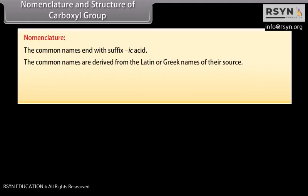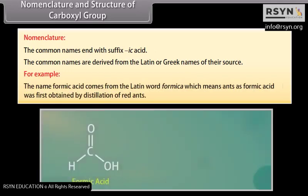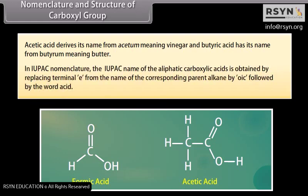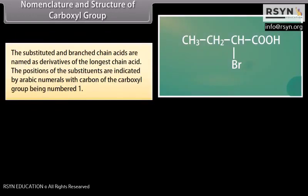Nomenclature: the common names end with the suffix -ic acid. The common names are derived from the Latin or Greek names of their source. For example, the name formic acid comes from the Latin word formica, meaning ants, as formic acid was first obtained by distillation of red ants. Acetic acid derives its name from acetum, meaning vinegar, and butyric acid has its name from butyrum, meaning butter. In IUPAC nomenclature, the name of aliphatic carboxylic acids is obtained by replacing terminal -e from the name of the corresponding parent alkane by -oic, followed by the word acid. Substituted and branched chain acids are named as derivatives of the longest chain acid, with positions of substituents indicated by Arabic numerals, with the carbon of the carboxyl group being number 1.